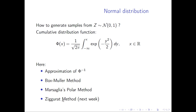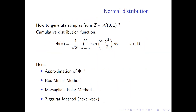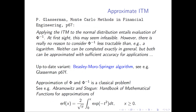The ziggurat method, which we will do next week, is the method which MATLAB uses. So Box-Muller and Massalia are classical methods, but the ziggurat is actually what MATLAB is doing. Let's start with the approximate ITM. Sometimes people make a big fuss about the fact that there is no explicit expression for the CDF of the normal, but nevertheless we can apply the ITM to this, at least approximately.